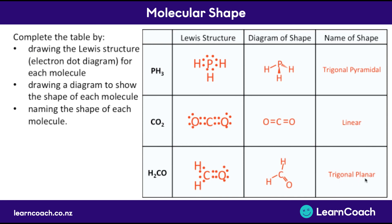And this is your answer. Using electron pairs that repel each other gets us from Lewis diagrams to shapes, and we need to remember the names of all those shapes and the angles between them.